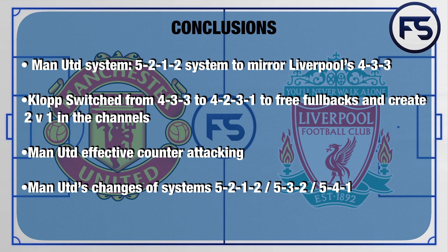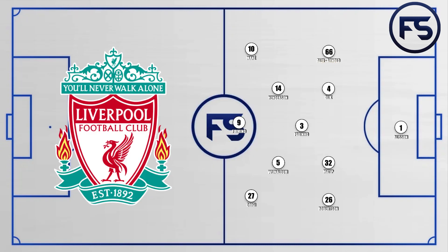Manchester United counter-attacked effectively during the game, scoring their goal from a counter-attack and having numerous other opportunities. We're going to look at the changes of systems Manchester United used: the 5-2-1-2, the 5-3-2, and ultimately finishing with the 5-4-1 during the game.